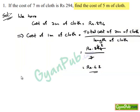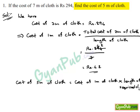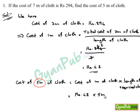7 goes into 294 by 42 times, so cost of 1 meter of cloth is Rs. 42. Now we have to find cost of 5 meters of cloth, which is nothing but cost of 1 meter of cloth multiplied by length of required cloth. This is equal to Rs. 42 multiplied by 5 meters, which gives Rs. 210.